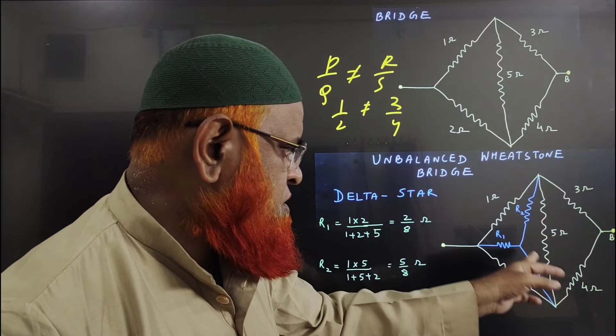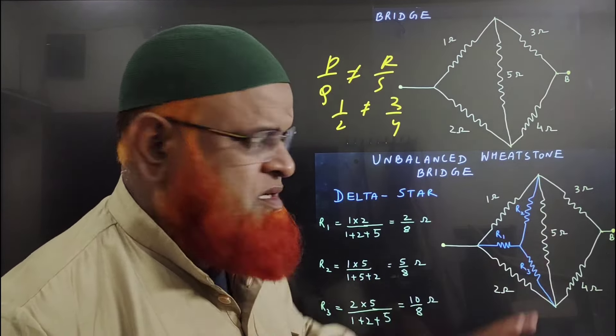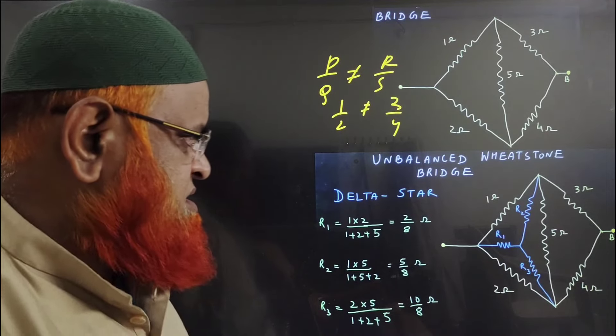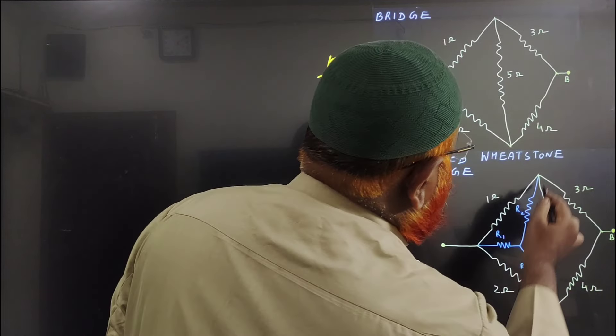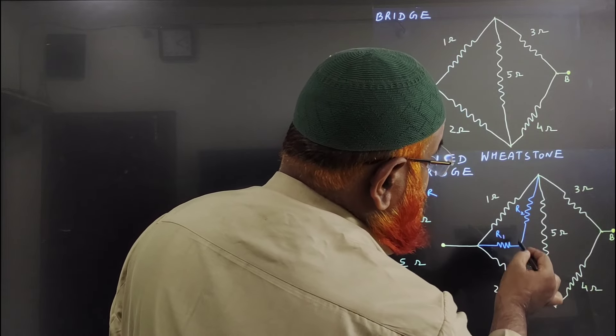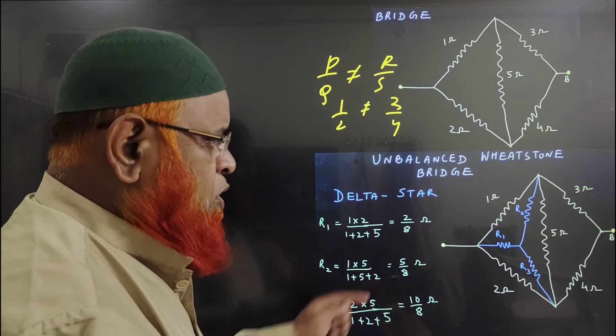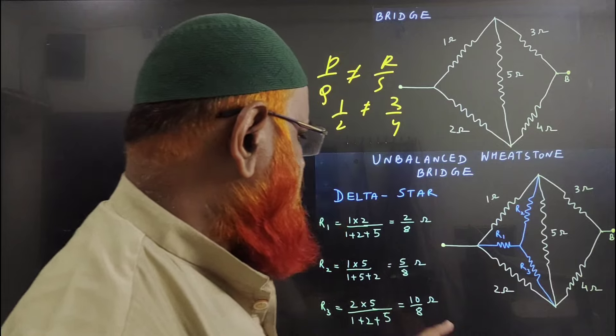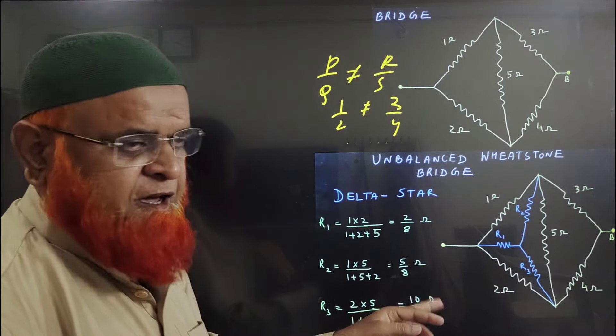Now see: 1 and 5 is replaced by R2, 1 and 2 is replaced by R1, and 2 and 5 is replaced by R3. But what is the value of R1, R2, and R3? If you want to find out R1, you have to multiply 1 and 2 and divide by the sum of all three.